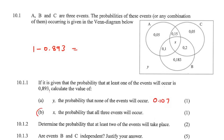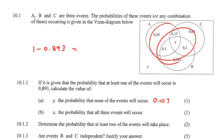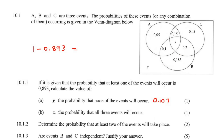Now work out this one over here. Remember, all of this adds up to 1 — everything. So if this stuff over here is 0.893, then this one would be 1 minus that.